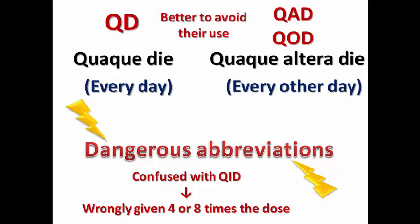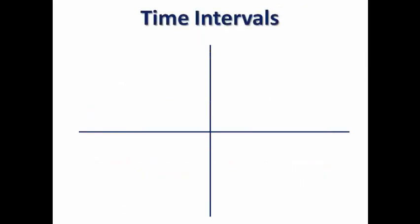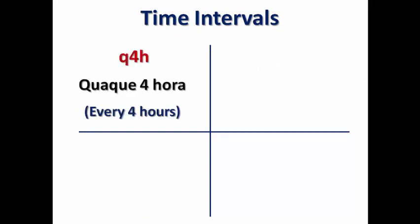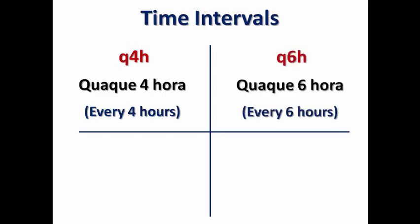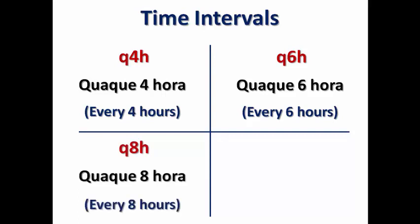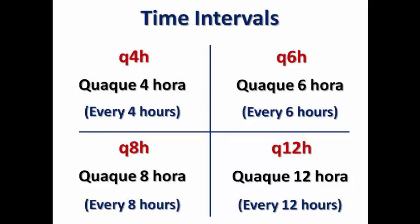That's why it's better to avoid QD and QAD because they are confusing with QID. There are some abbreviations used to describe time intervals for dosage frequency. For example, Q4H stands for 'quaque quarta hora,' meaning every four hours; Q6H means every six hours; Q8H means every eight hours; and Q12H means every twelve hours.